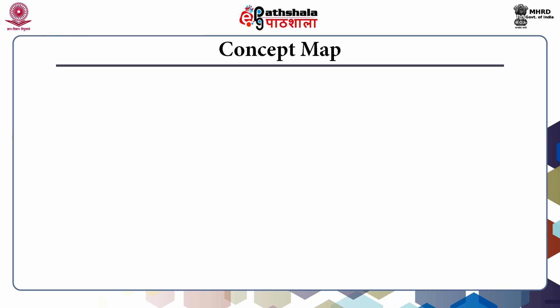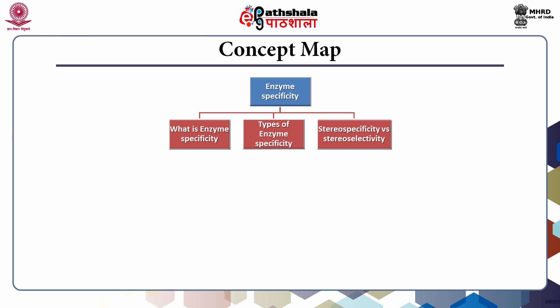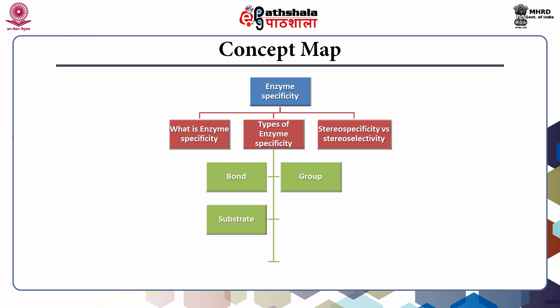This slide shows the concept map that will be followed in this lecture. We will first study what we mean by enzyme specificity. In the next section we will look at the various types of enzyme specificity, namely bond specificity, group specificity, substrate specificity, optical specificity, geometrical specificity, and cofactor specificity. Lastly, we will see how the two similar terms stereospecificity and stereoselectivity differ in enzymology.